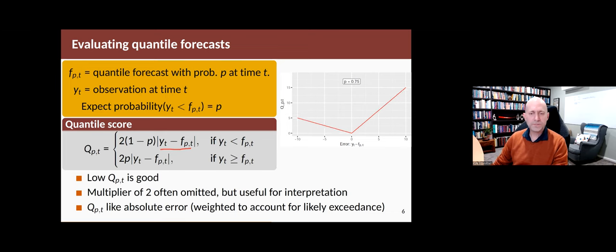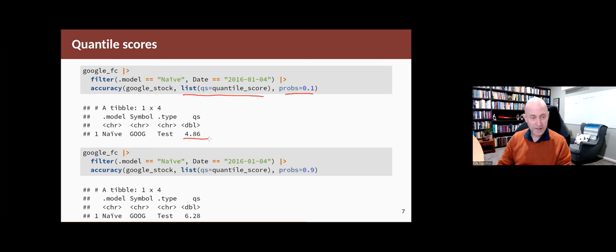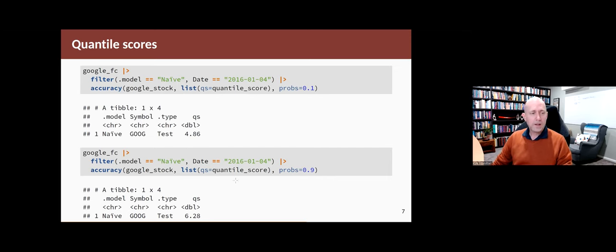That's how you do quantile scoring. In Fable, we can easily do these computations using the accuracy function, just as we did for point forecasts, but instead of the defaults we specify a quantile score and say what probability we want. If we ask for probability 0.1, it returns the quantile score using that equation. If we ask for probability 0.9, here's the quantile score — a little worse. So the model is better at estimating the 0.1 quantile than the 0.9 quantile. Together, these two quantiles give us the 80% interval.